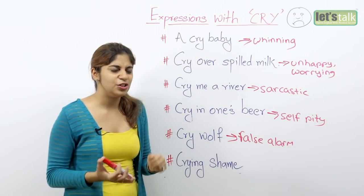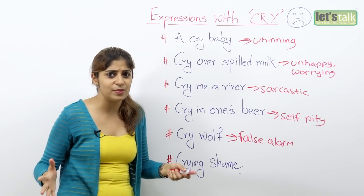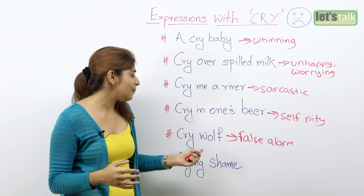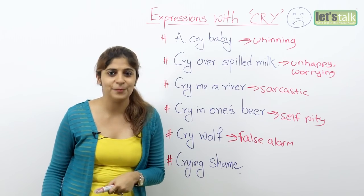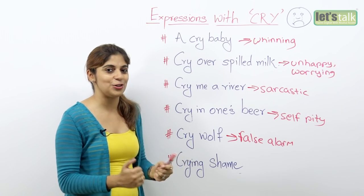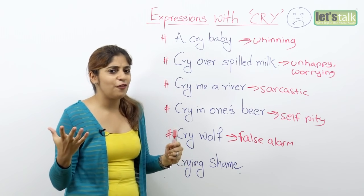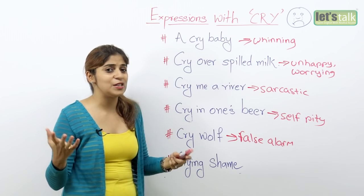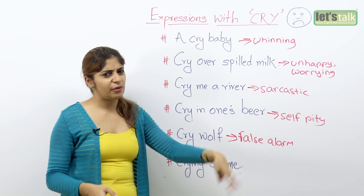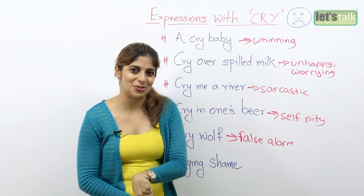Cry wolf is used as an expression in English when someone is trying to get help when they really don't need it — like a false alarm. For example, my cousin is always screaming that there's a mouse in the house, but I know it's just a false alarm, so I'd say, 'Oh, she's just crying wolf.' Someone who's always lying or asking for help when it's not really needed — you can say they are crying wolf.